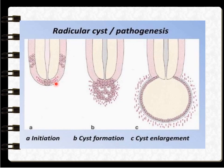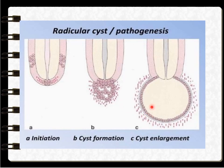In the initiation phase, cell rests of Malassez at the periapical area are stimulated by inflammatory products from the bacterial infection. These cell rests start to divide and increase in number. For survival they need a nutrient supply, which diffuses from the adjacent connective tissue into the epithelial cells. However, the innermost cells do not receive nutrients and start to die — a process called liquefaction necrosis.